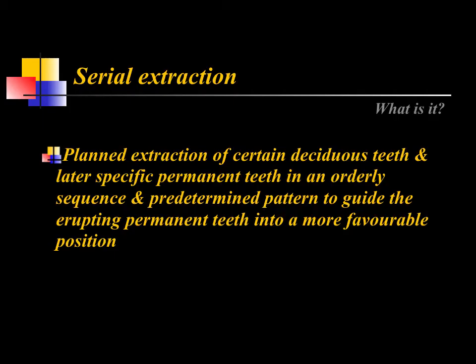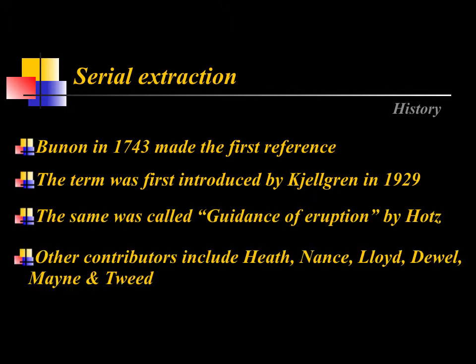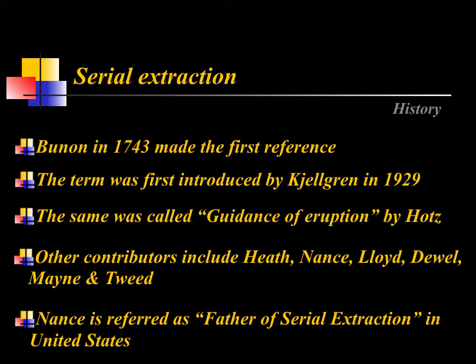The first is serial extraction. The definition: it is a planned extraction of certain deciduous teeth and later specific permanent teeth in an orderly sequence and predetermined pattern to guide the erupting permanent teeth into a more favorable position. It involves extraction of both certain deciduous and some permanent teeth. The term was introduced by Algrin in 1929, and Nance is considered the father of serial extraction in the United States.